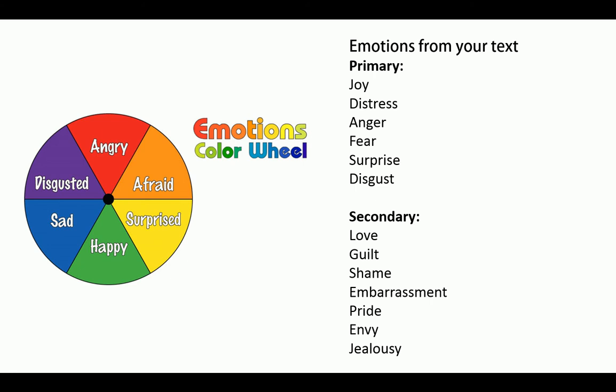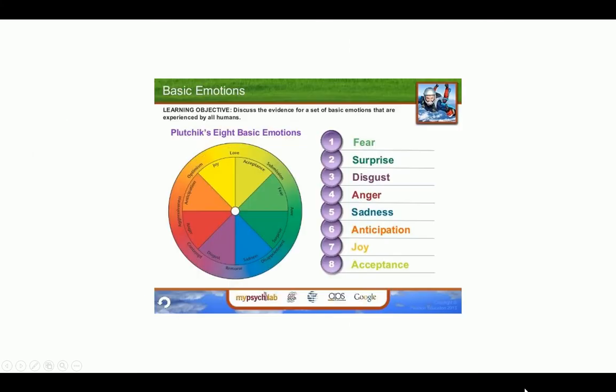Just like we have primary colors and secondary colors — and we can make secondary colors by mixing primary colors together — we can do the same thing with emotions. We can make secondary emotions by mixing together two primary emotions.